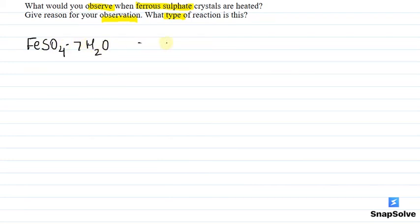We are given ferrous sulfate crystals: FeSO4·7H2O. This is a heat question. First, let me complete the reaction.